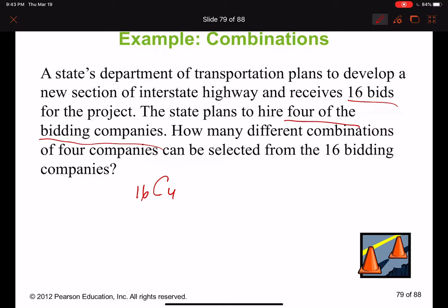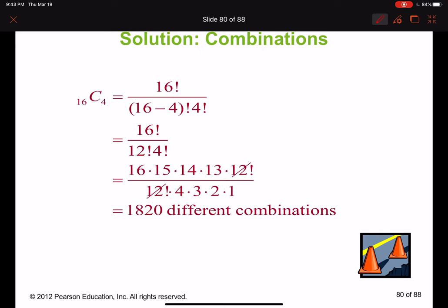How many different combinations of four companies can be selected? Well, four out of 16. In this case, order is not important because any four out of 16 can be chosen. Therefore we are going to use 16 factorial over 16 minus 4 factorial times 4 factorial. The result is going to be 16 factorial over 12 factorial and 4 factorial.